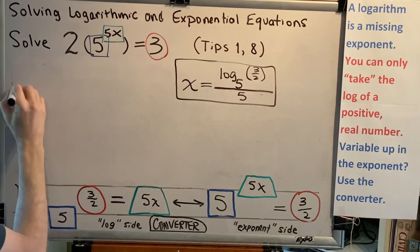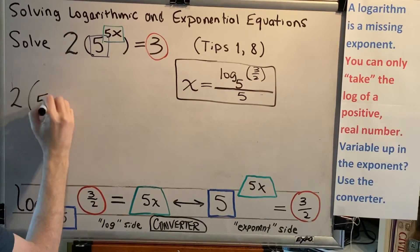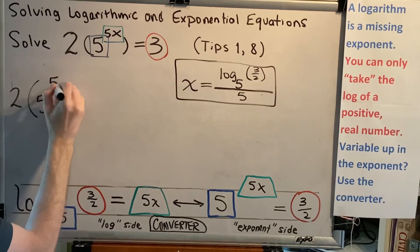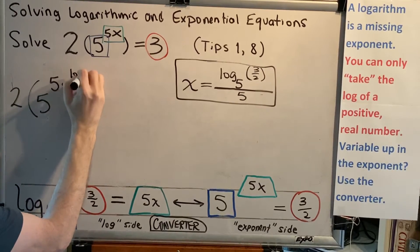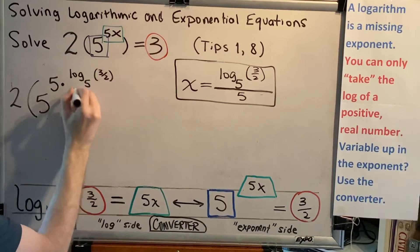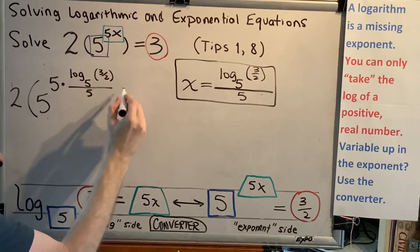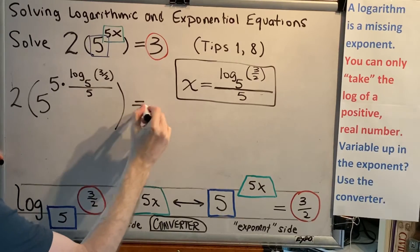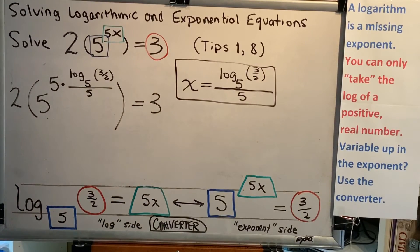Alright, so now we have 2 times 5 raised to the 5x. And x is this fraction, log base 5 of 3 halves divided by 5 equals 3. Alright, there's a lot going on here.